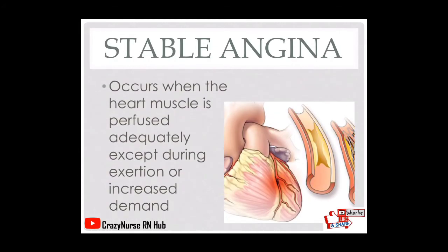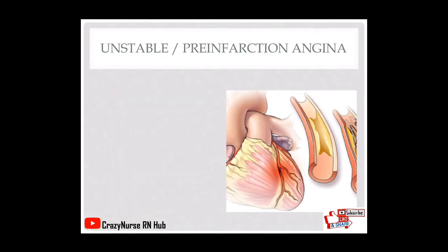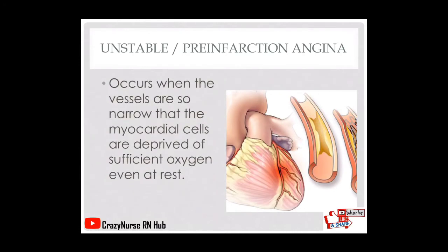Stable angina occurs when the heart muscle is perfused adequately except during exertion or increased demand. The patient experiences pain only upon exertion, but if the patient is at rest, they would not experience chest pain. Unstable or pre-infarction angina occurs when the vessels are so narrow that myocardial cells are deprived of sufficient oxygen even at rest, so the patient may experience chest pain while resting.